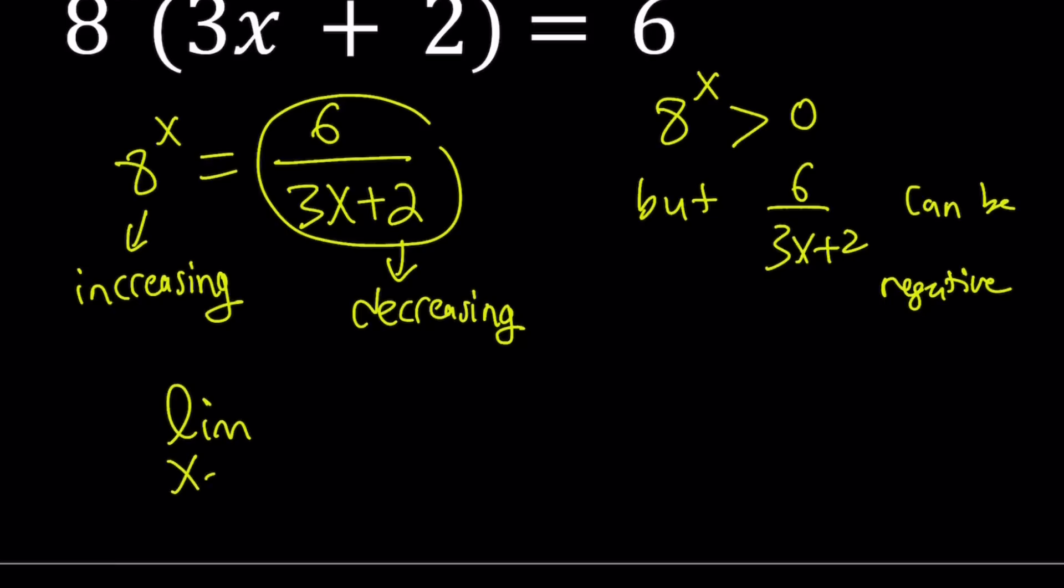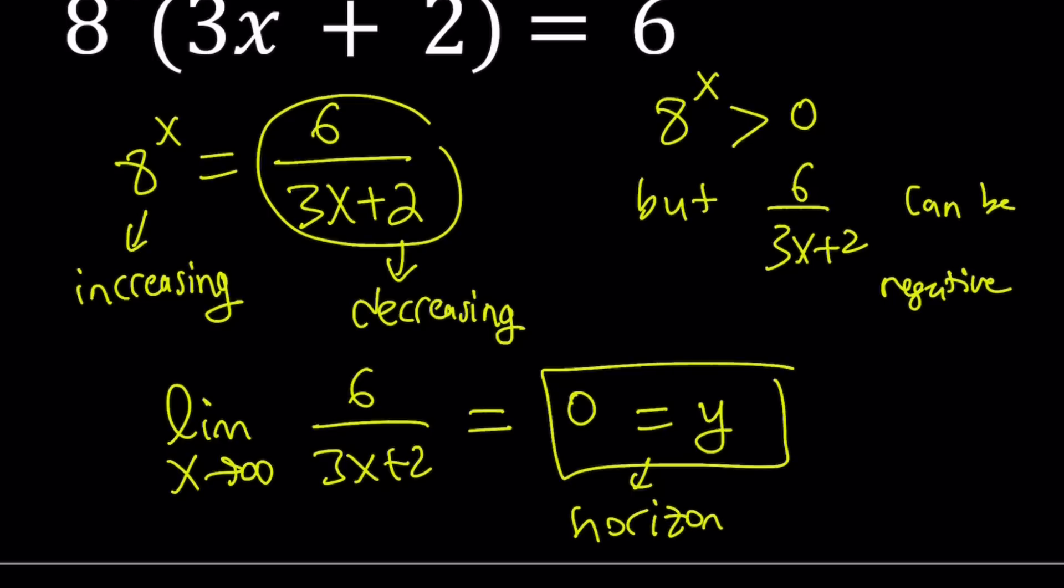Limit as x approaches infinity of 6 over 3x plus 2 is 0 because the denominator increases without bound. And guess what? This gives you, since the limit at infinity is a constant, I can set it equal to y. And guess what? This is going to give you a horizontal asymptote.